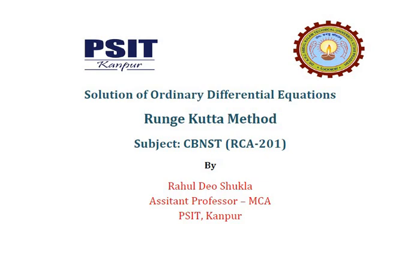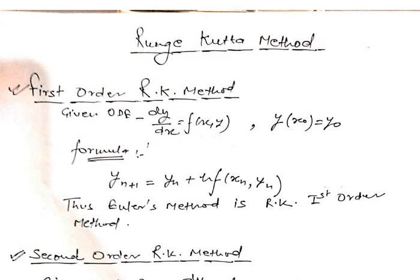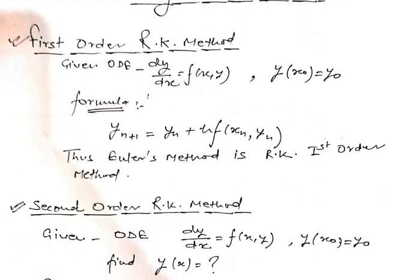We have four kinds of Runge-Kutta methods, or we can say there are four orders. One by one we will see the basic principle of each order. For any differential equation to be solved, you will be given dy/dx = f(x, y) and an initial condition y(x₀) = y₀. That prerequisite applies whether using Runge-Kutta, Picard's, Euler's, or Taylor series method.